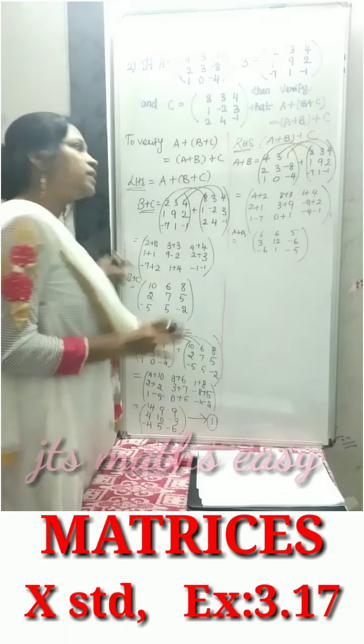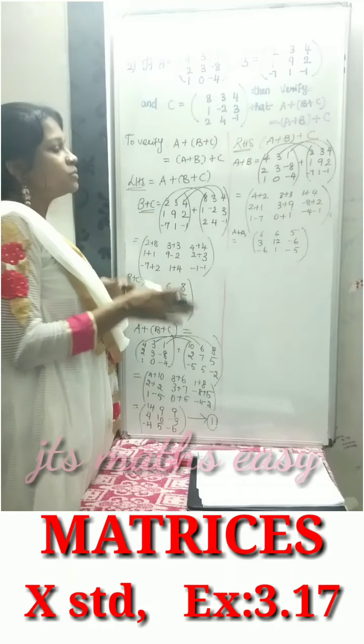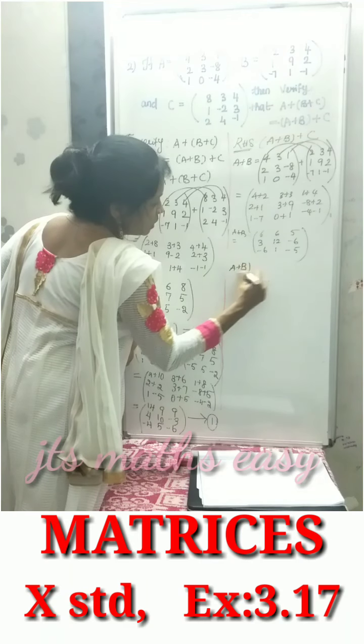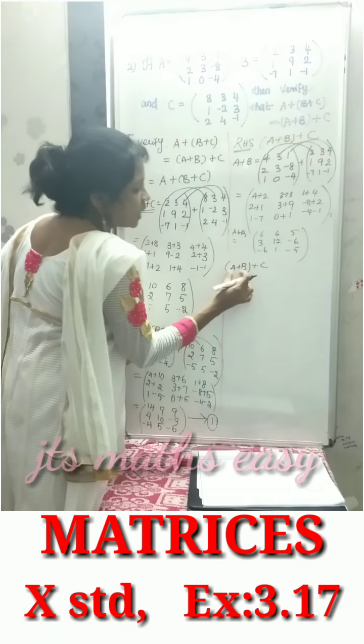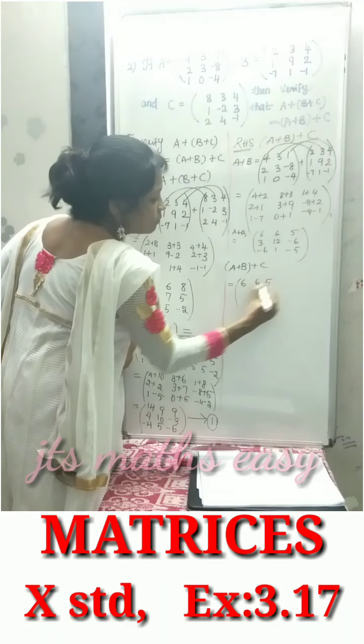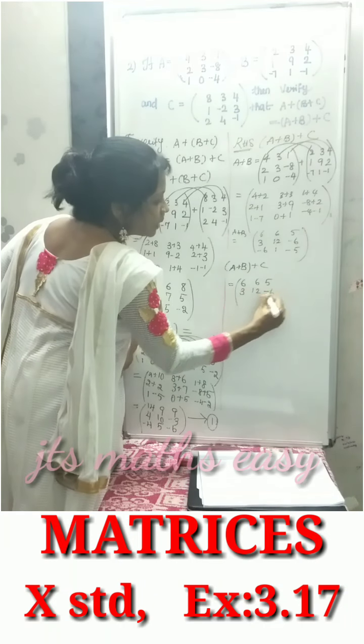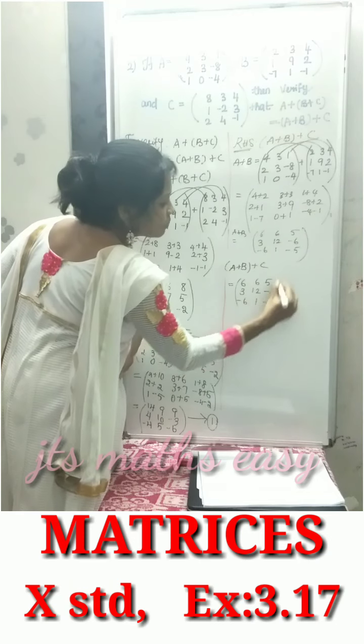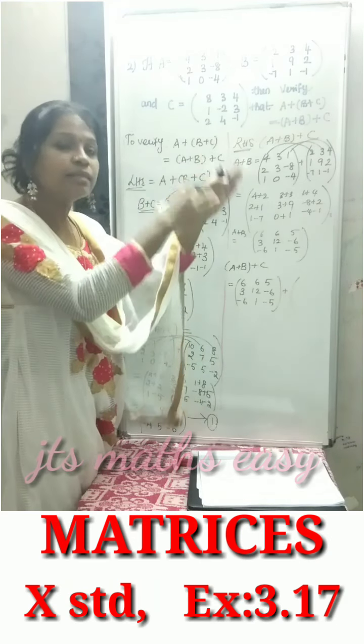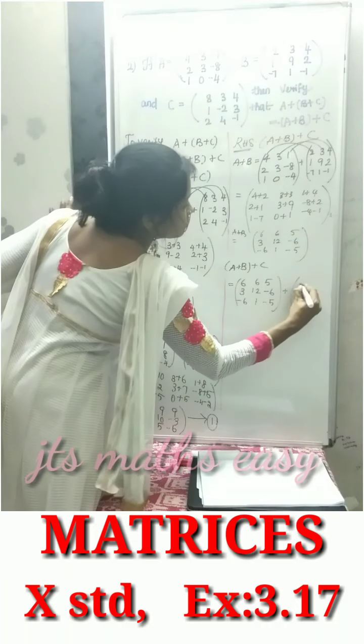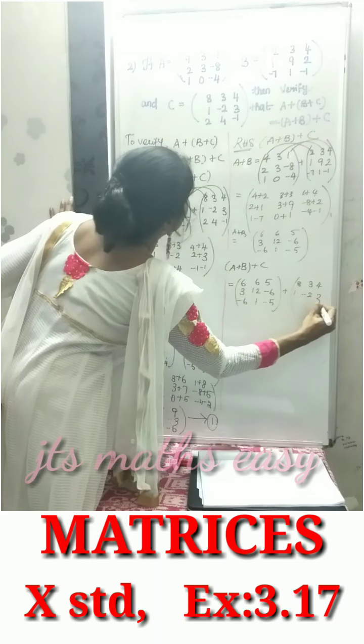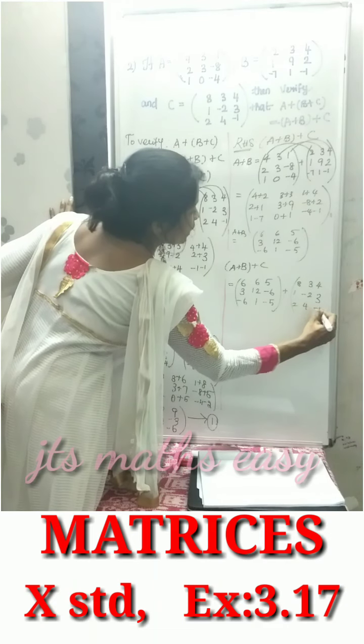Now we add A plus B plus C. The result of A plus B is 6, 6, 5, 3, 12, minus 6, minus 6, 1, minus 5. Matrix C is 8, 3, 4, 1, minus 2, 3, 2, 4, minus 1.